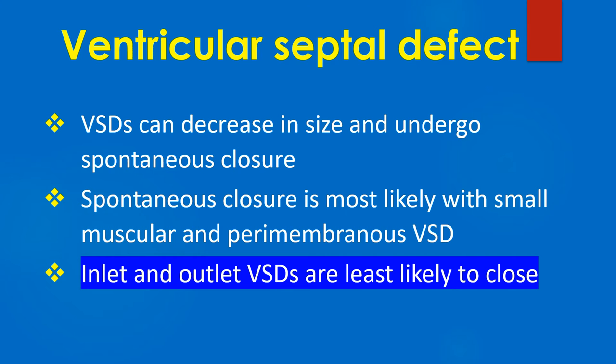VSDs can decrease in size and undergo spontaneous closure. Spontaneous closure is most likely to occur with small muscular VSD and perimembranous VSD, while inlet and outlet VSDs are least likely to close.